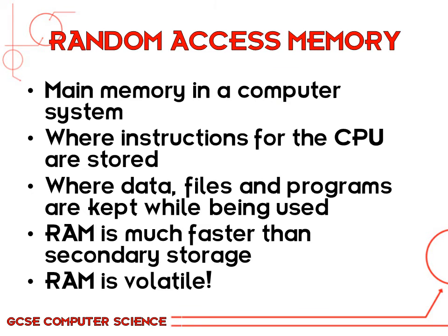During the CPU chapter, every time we referred to memory we were referring to random access memory. This is used as the main memory in a computer system — it's where all the instructions processed by the CPU are coming from. RAM would be volatile memory, meaning if your computer powers off suddenly, whatever it was doing at the time is lost and forgotten.